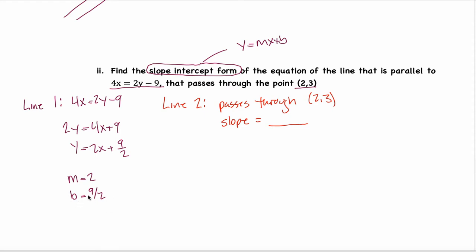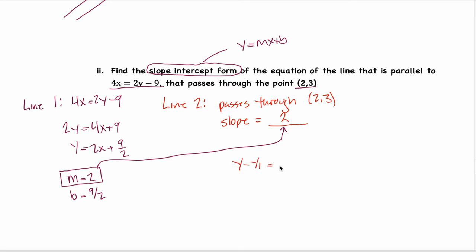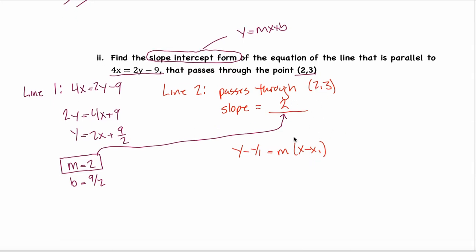I don't care about the y-intercept at all — all I care about is the slope. Because Line 1 and Line 2 are parallel, the slope of Line 1 must be the exact same as the slope of Line 2. Now I have all the information I need: the slope and a point on Line 2. I'll use point-slope form: y minus y1 equals m times x minus x1, plugging in m, x1, and y1 respectively.